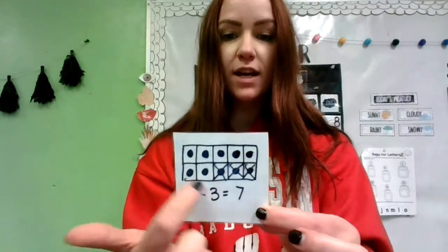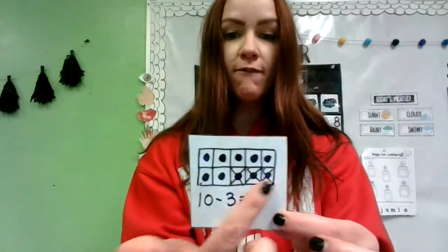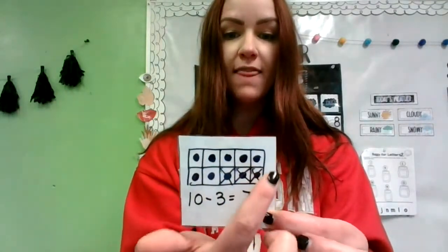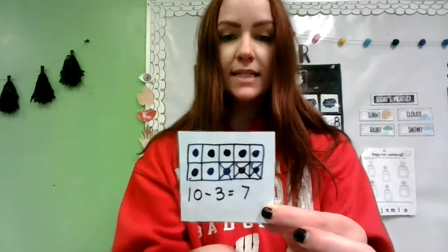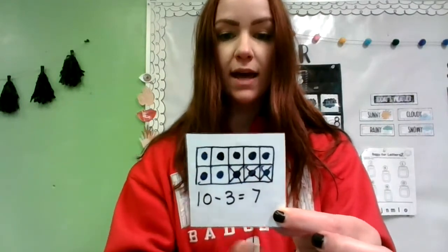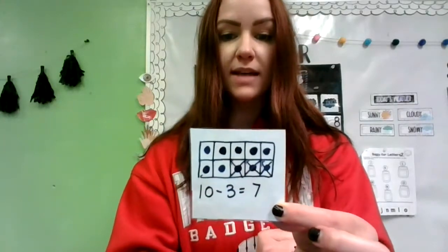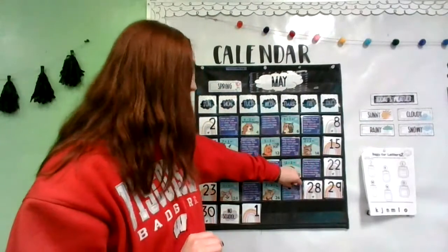And I illustrated our number story with having first a full ten frame — one group of ten — and then I crossed out one, two, three mice that ran away. I have seven left in the basket. Ooh, Poppy has a talented cat — they caught ten mice and only three of them ran away.